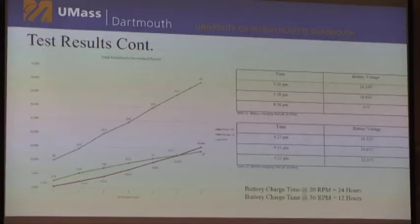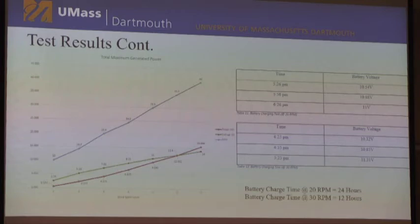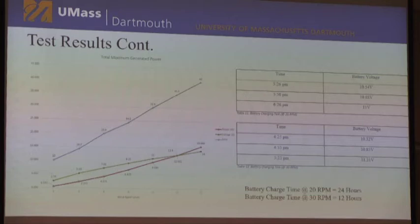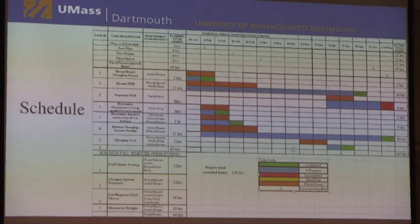On the left-hand side is the graph for maximum power generated from the wind turbine. As RPM increases — indicating wind speed increases — the power generated also increases. On the right-hand side is our battery charge time test, where we wanted to see how much the battery charged in a one-hour span. We tested at 20 RPM and 30 RPM. At 20 RPM, the battery increased by half a volt in one hour. At 30 RPM, it increased by a full volt. If the battery were completely dead, it would take 24 hours to charge at 20 RPM, and 12 hours to charge at 30 RPM.